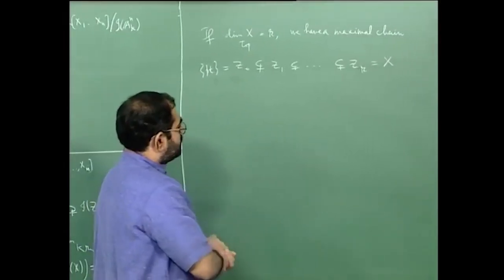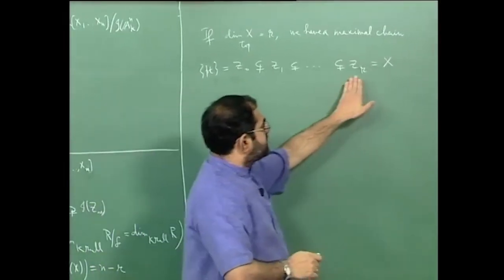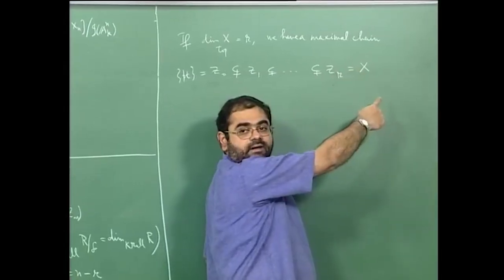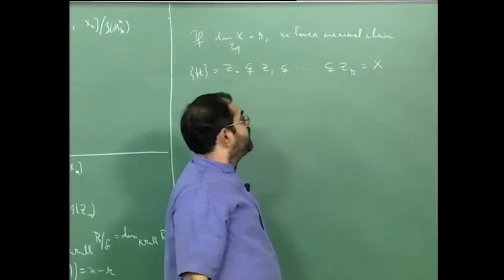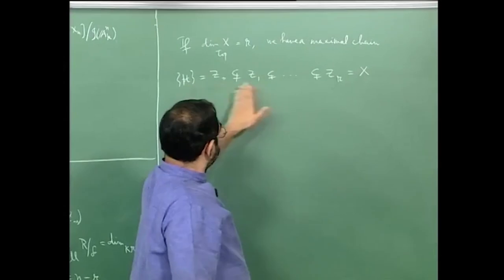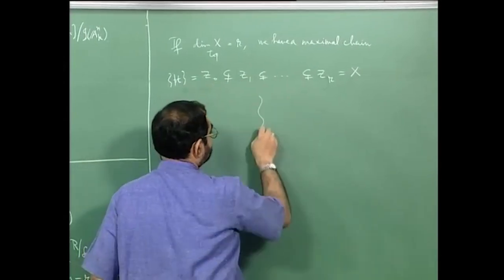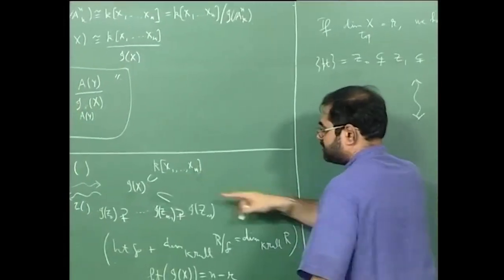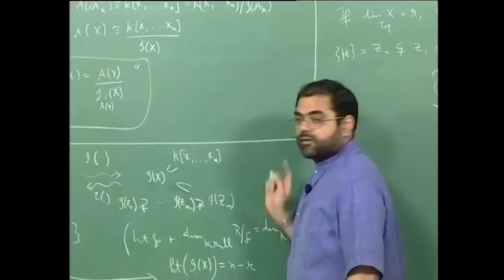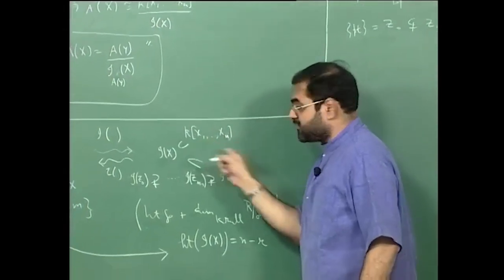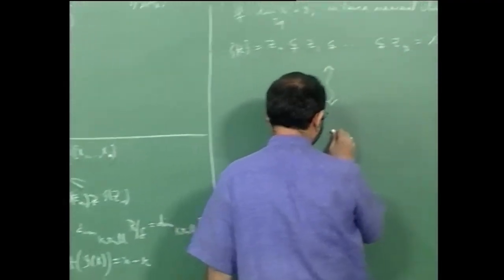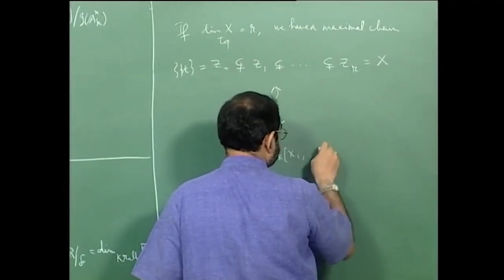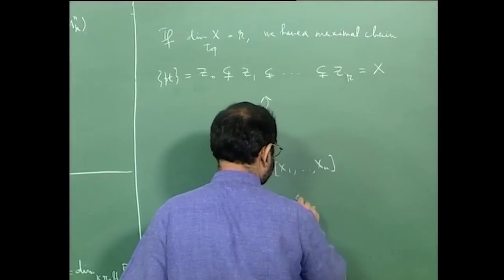Similarly, z_r has to be X itself. If z_r is not X, then I can add X to get a bigger chain. So corresponding to this, if you look at the corresponding diagram in the polynomial ring — the ring of functions on affine space — you have in k[x₁, …, xₙ] the ideal I(X).